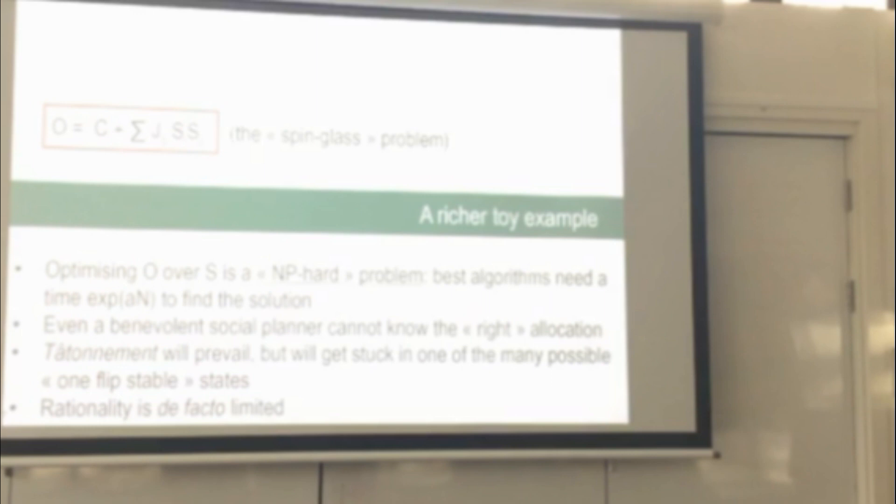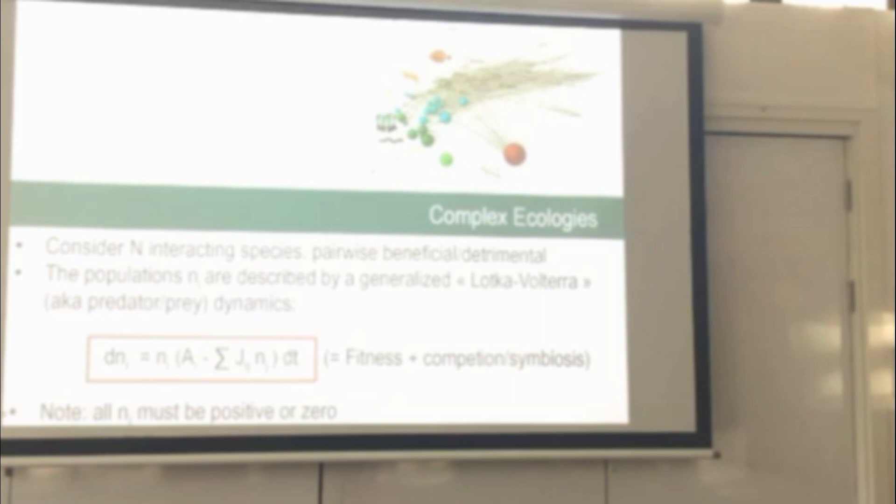So if you imagine that this model would be put to work, then firms would individually try to find their best city. But the system as a whole will get stuck in one of the many possible one-flip stable states. So one-flip means that no firm can improve its global output by changing city. So in this model, rationality is de facto limited because you can't assume that you're going to know what others are doing because it's just random. They're going to choose globally a completely random, quasi-optimal solution, but it's one in a million, and you have no way to guess that. So this is another example of this chaoticity of properties.